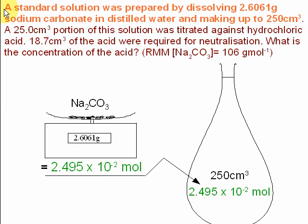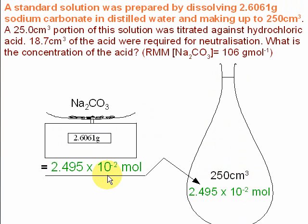If we read the whole of the first line, it says a standard solution was prepared by dissolving just over 2.6 grams of sodium carbonate in distilled water and making up to 250 cm³. So this mass of sodium carbonate, which we weighed out, we put in a volumetric flask, made up to the mark, and this was exactly 250 cm³. Previously we worked out the amount of sodium carbonate, so all of that amount will end up in the volumetric flask.